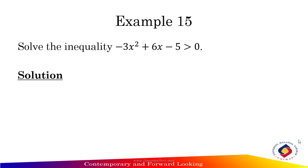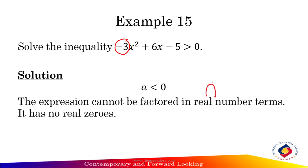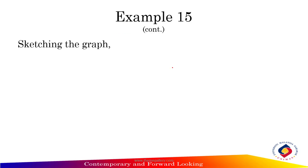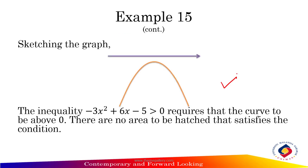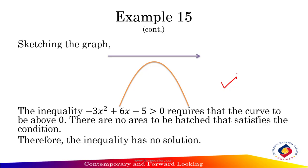Example 15: Solve the inequality -3x² + 6x - 5 > 0. The coefficient of x² is a = -3, and since -3 < 0, this is a sad-face graph. The expression cannot be factored in real number terms — it has no real zeros. Sketching the graph shows the curve lies entirely below the x-axis. Since the inequality requires the curve to be above 0, there is no area that satisfies this condition. Therefore, the inequality has no solution.